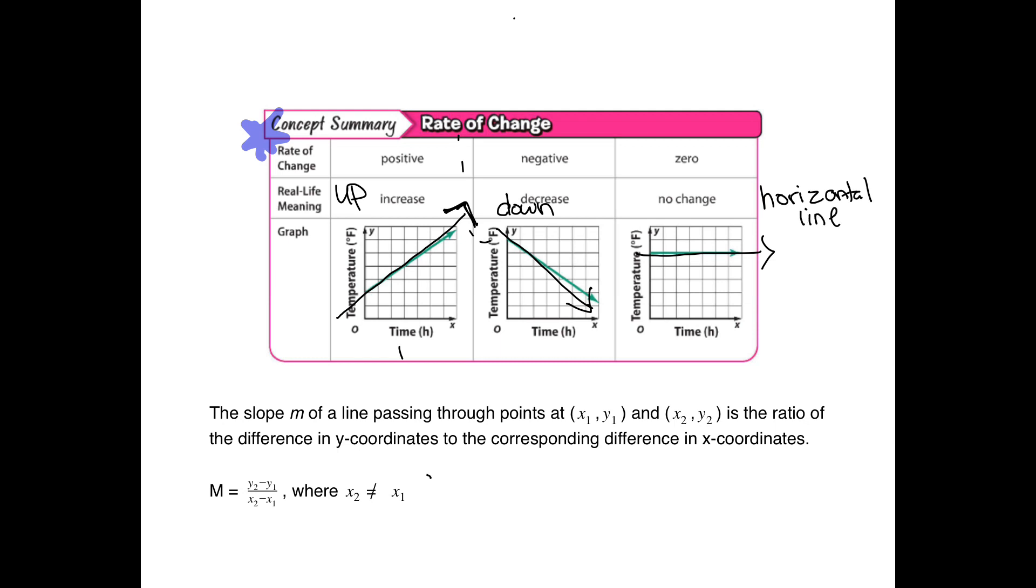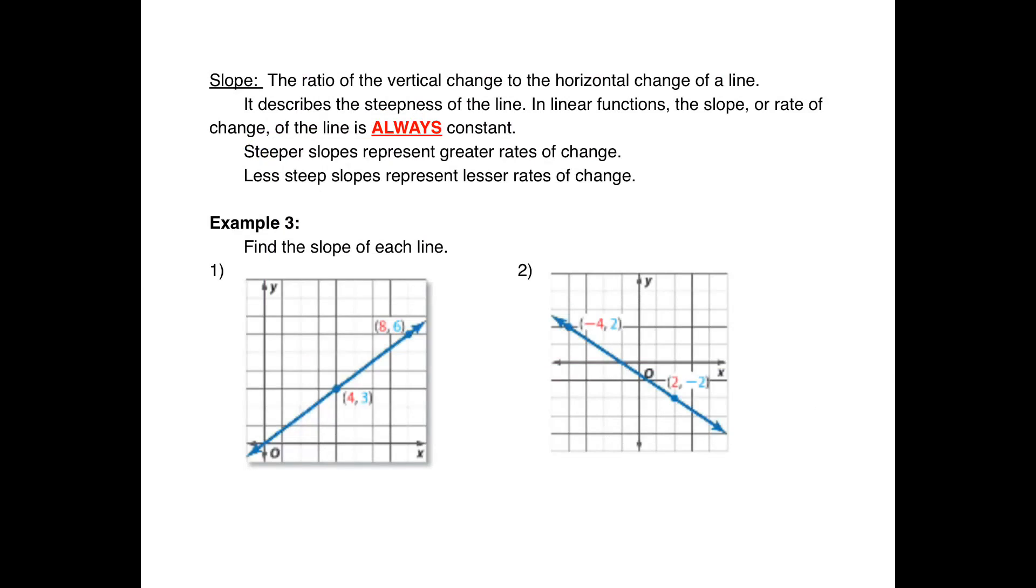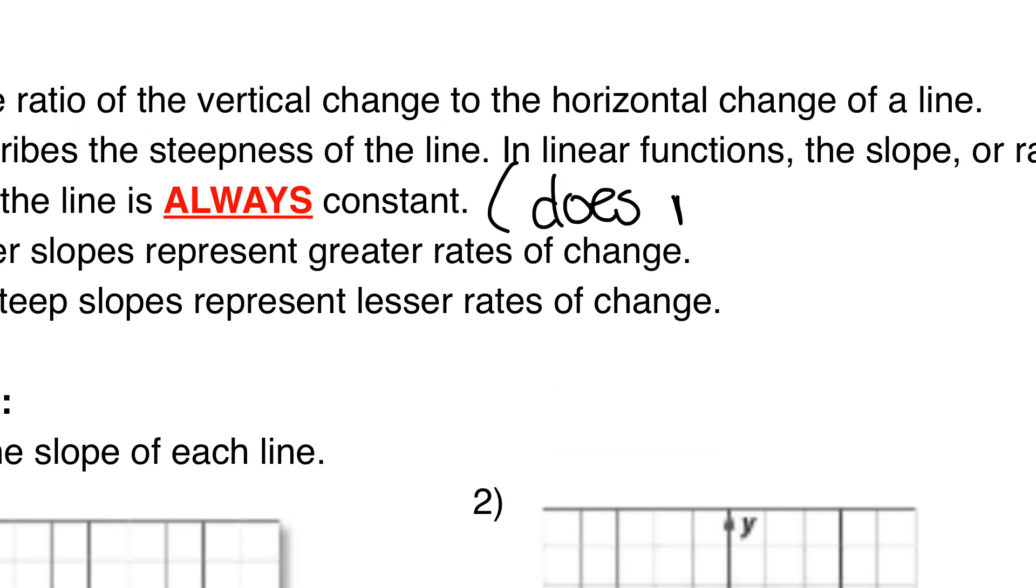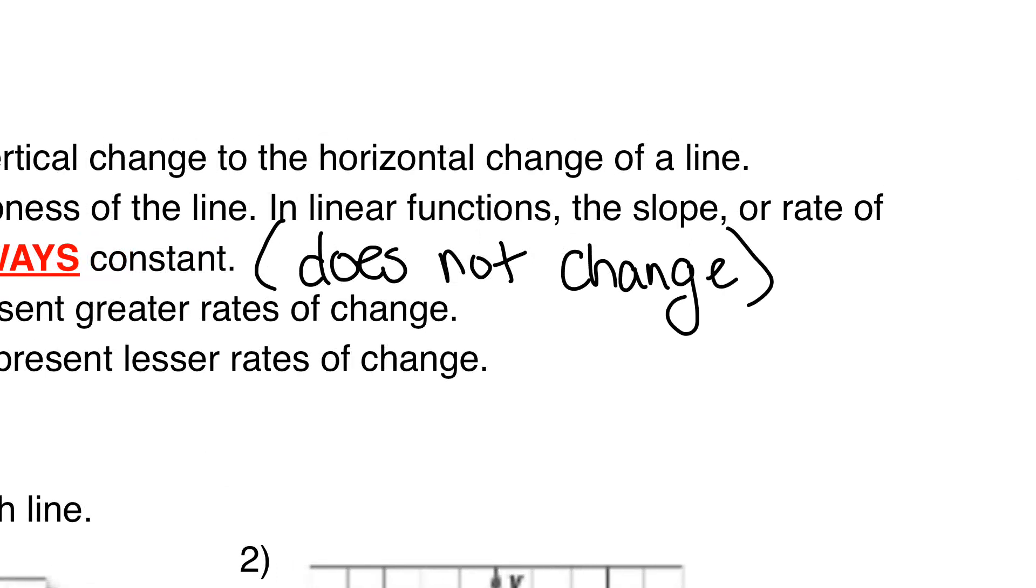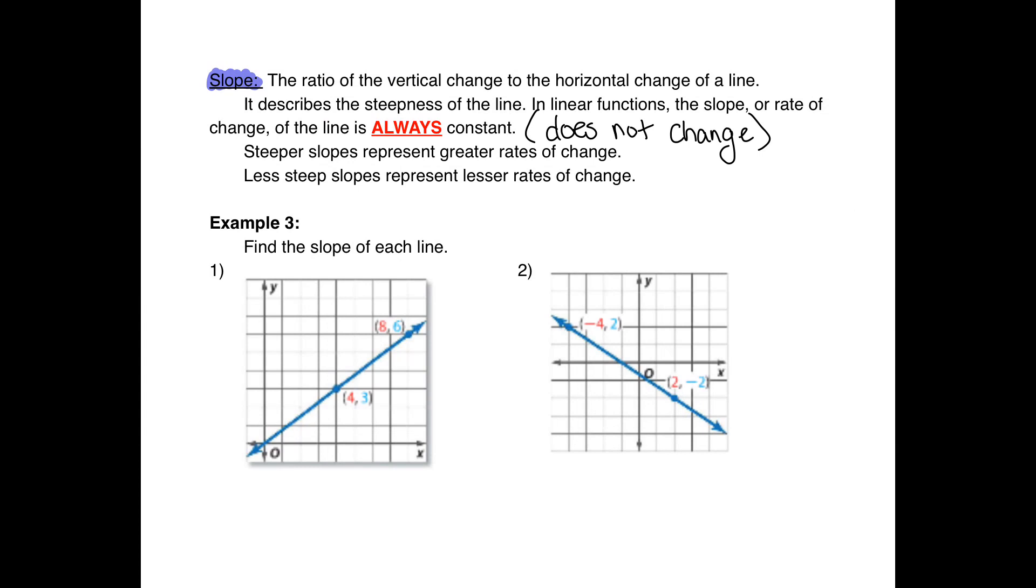Down here we have our equation to tell us the difference between a graph of a slope. The ratio of vertical change to horizontal change of a line is the definition of slope. It describes the steepness of the line. In linear functions, the slope or rate of change is always constant, which means it doesn't change. The steeper slopes present a greater rate of change; the less steep presents a lesser rate of change.